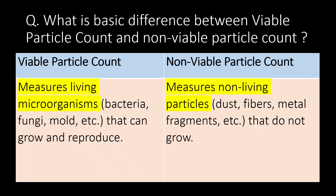These are living organisms that can grow and reproduce, while in the case of Non-Viable Particle Count, we measure non-living particles like dust, fibers, metal fragments, etc., that do not grow.